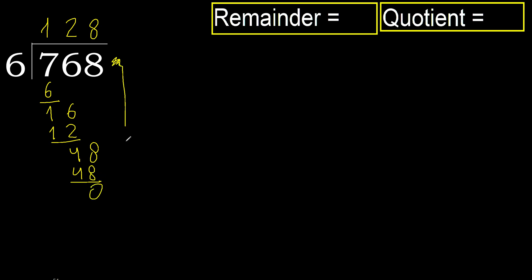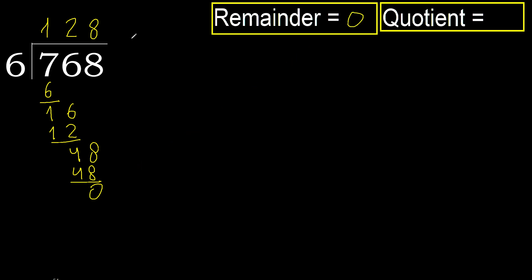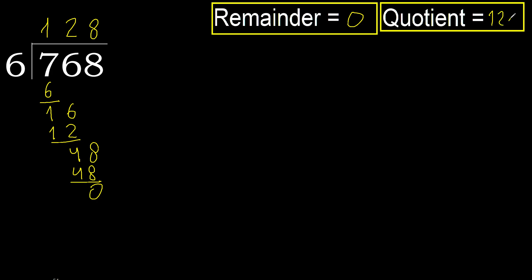There is no next number, therefore finish it. Remainder is 0. Therefore 768 divided by 6 is 128.